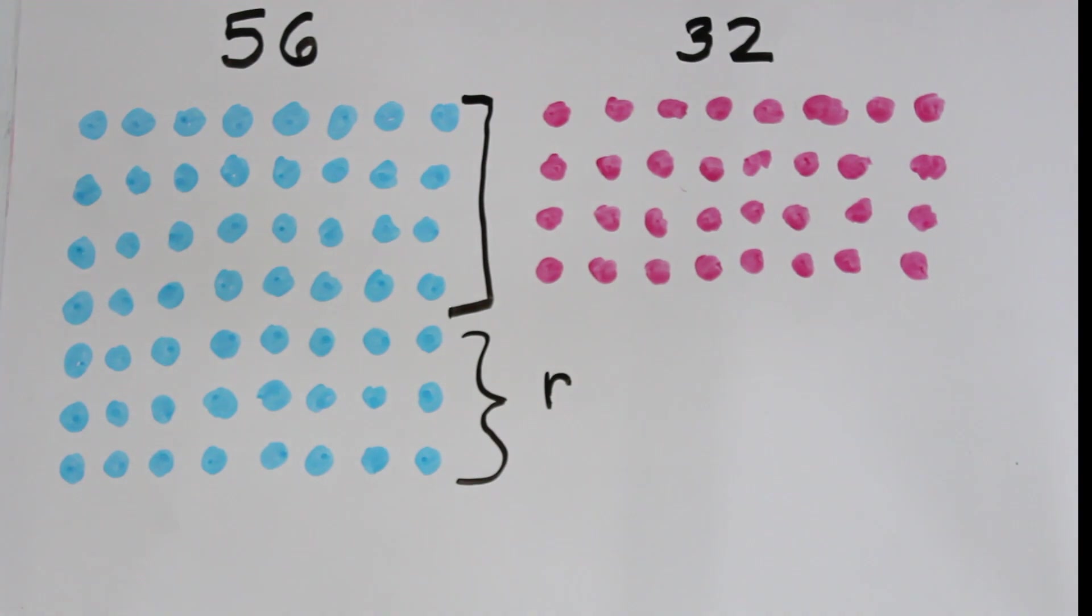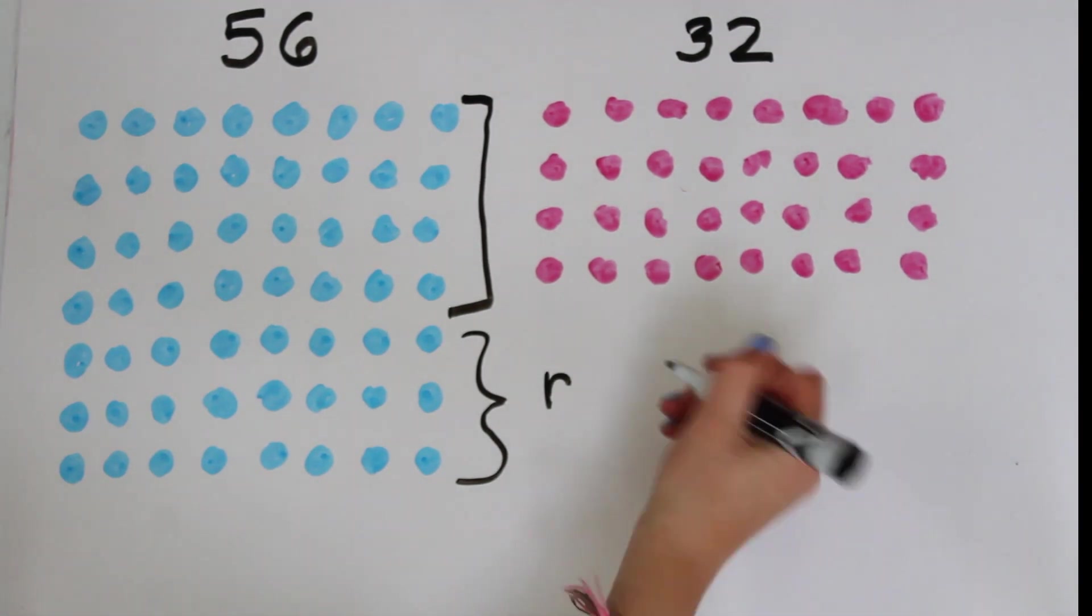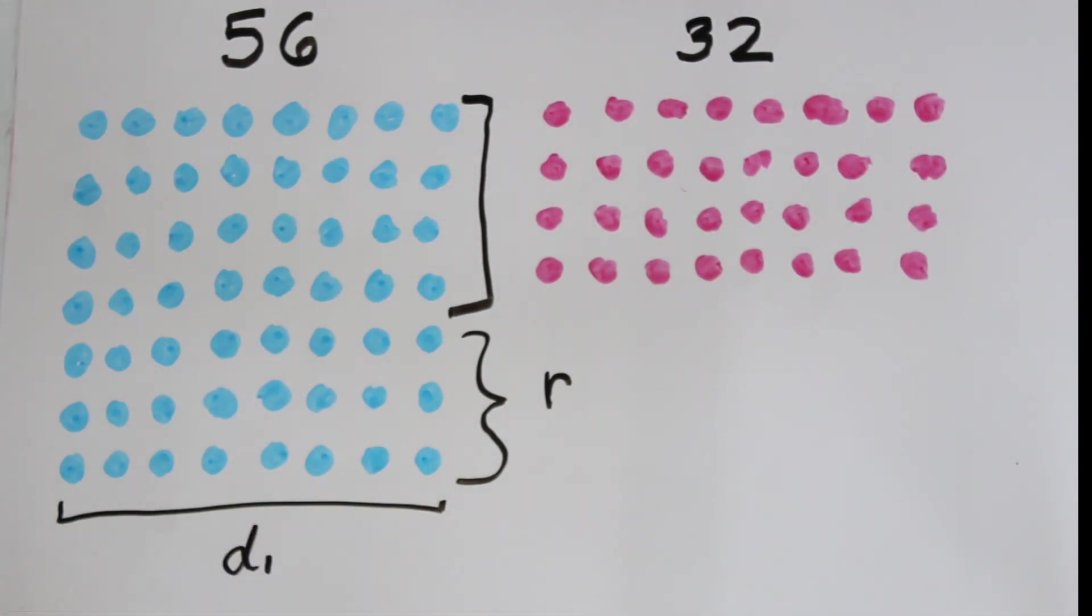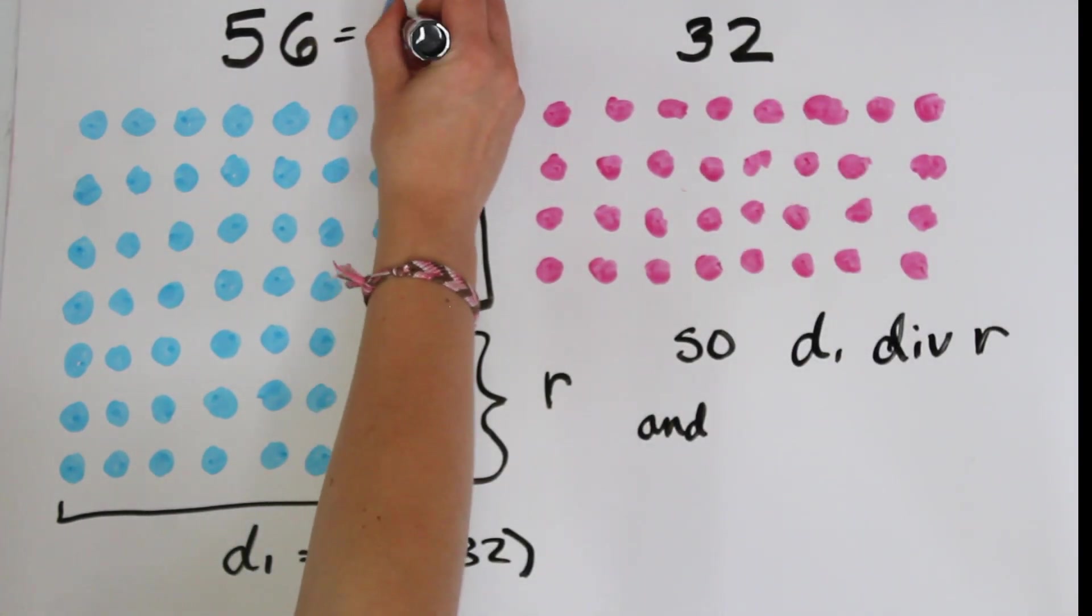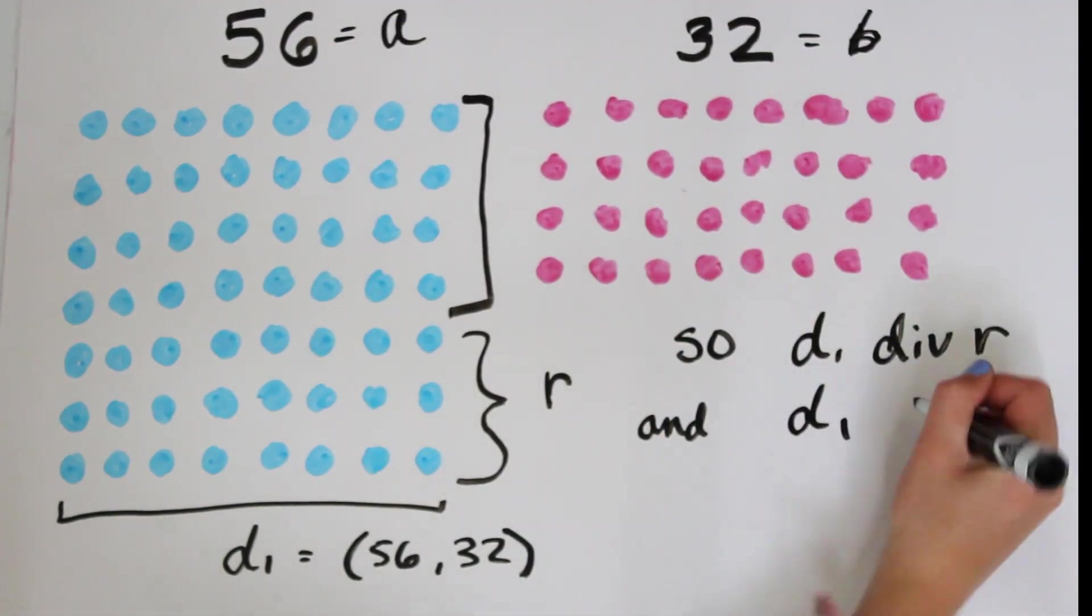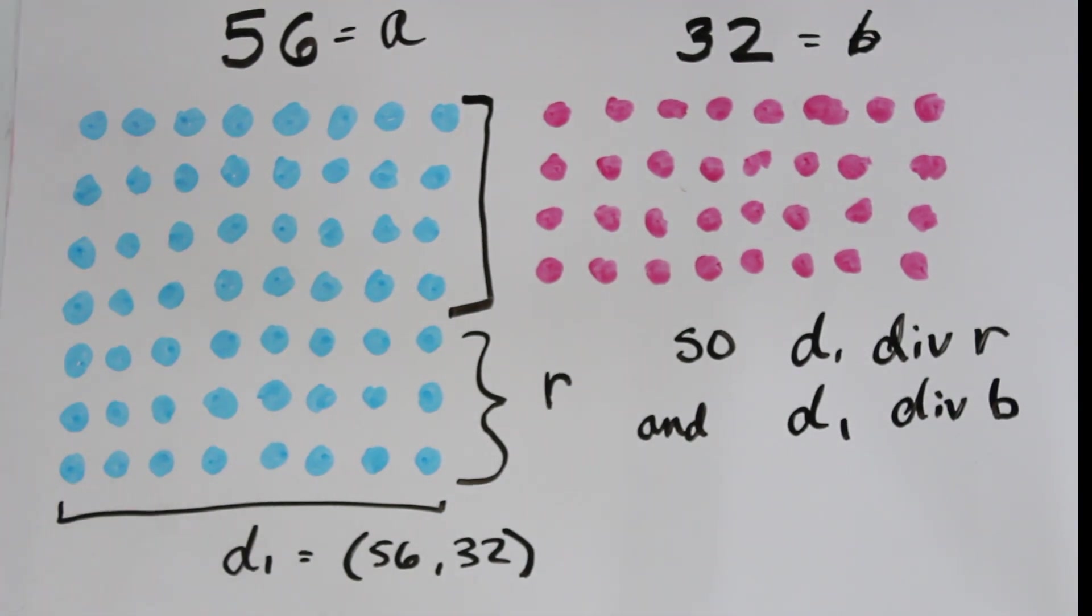Let's call this D1. We can see that 32 is 4 rows of D1, and 56 is 7 rows of D1, so the remaining 3 rows must be R. This means that D1 divides R, and D1 divides B, so the greatest common divisor of B and R is at least as big as D1.